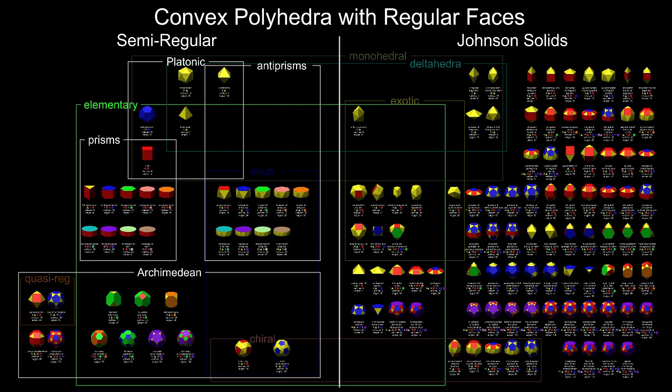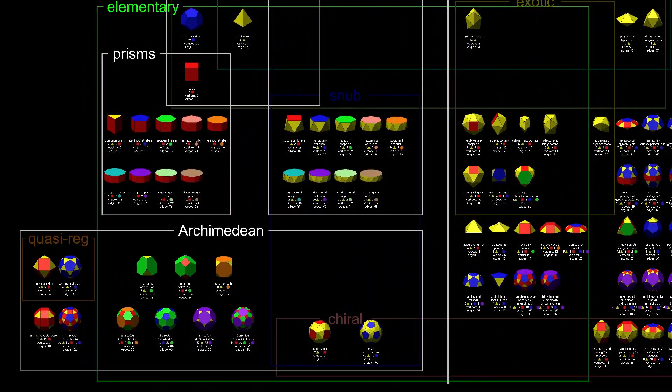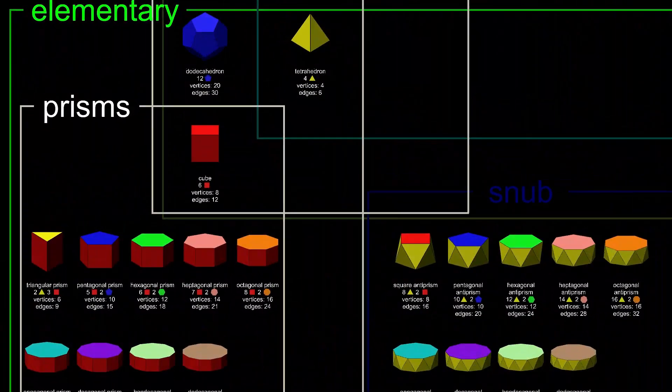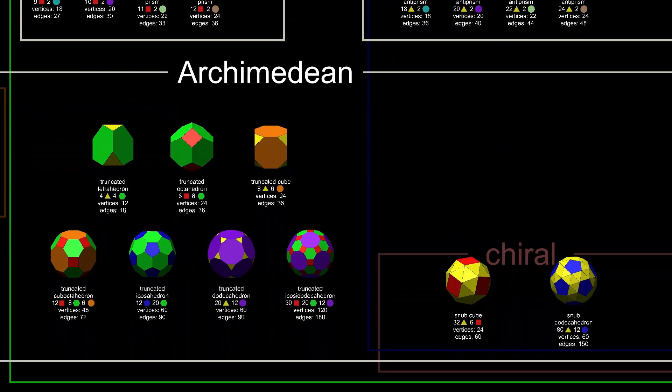Finally, there are elementary polyhedra. These are polyhedra that cannot be split in two. Three of the platonic solids are elementary, along with all prisms and antiprisms, except for the octahedron, and nine Archimedean solids.